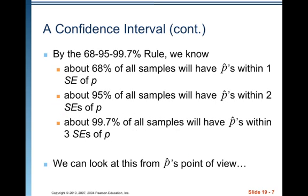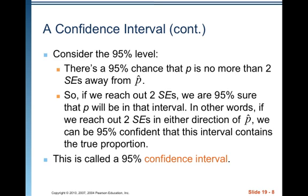By the 68-95-99.7 rule, we know that about 68% of all samples will have p-hats within one standard error of p, about 95% within two standard errors, and about 99.7% within three standard errors. We can look at this from p-hat's point of view. Consider the 95% level: there's a 95% chance that p is no more than two standard errors away from p-hat.